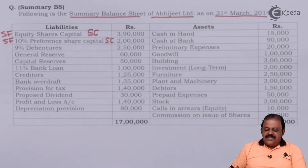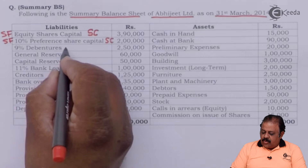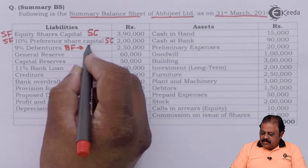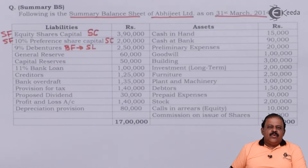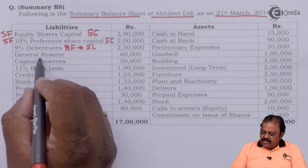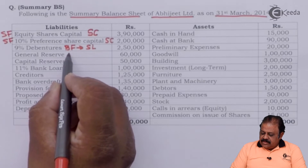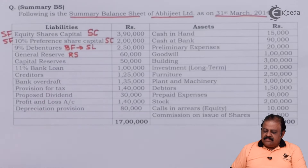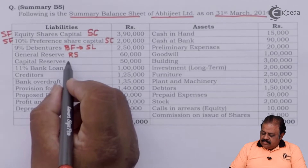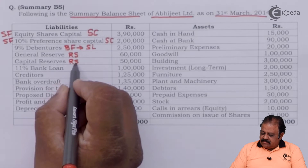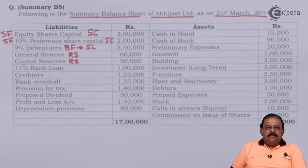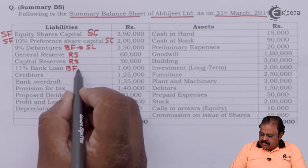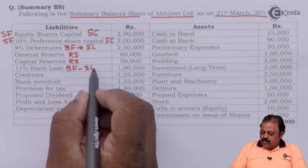9% debentures — this is a borrowed fund. You can categorize it as a secured loan. General reserve will be part of reserves and surplus. Capital reserve is also part of reserves and surplus. 11% bank loan is a borrowed fund — usually it's a secured loan.